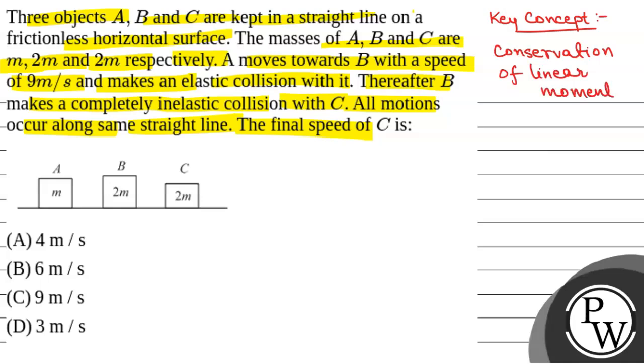We have given that A and B have an elastic collision. So, both momentum and energy will be conserved. Now, we have given that A is 9 meter per second and moving, and B is at rest.